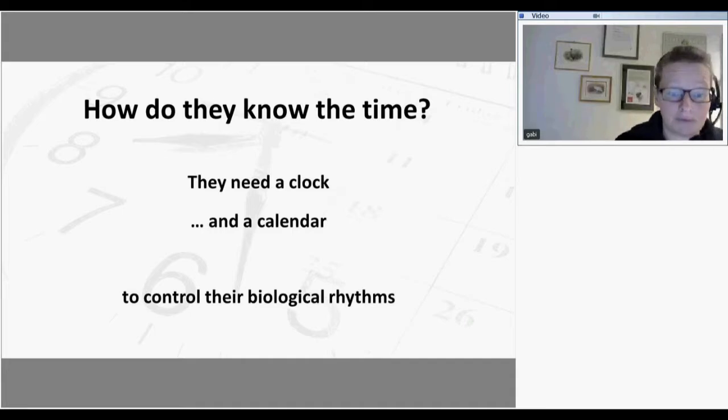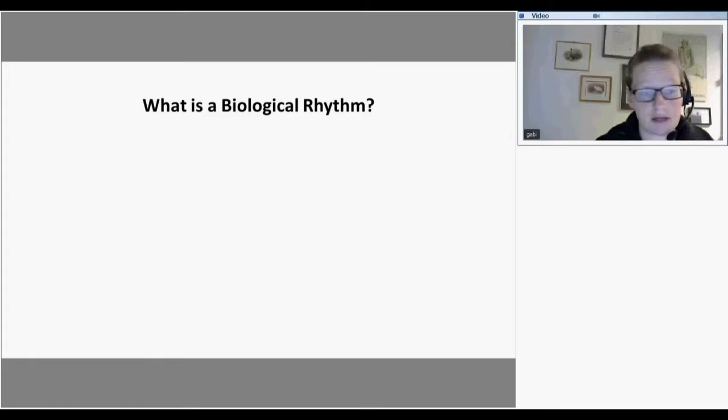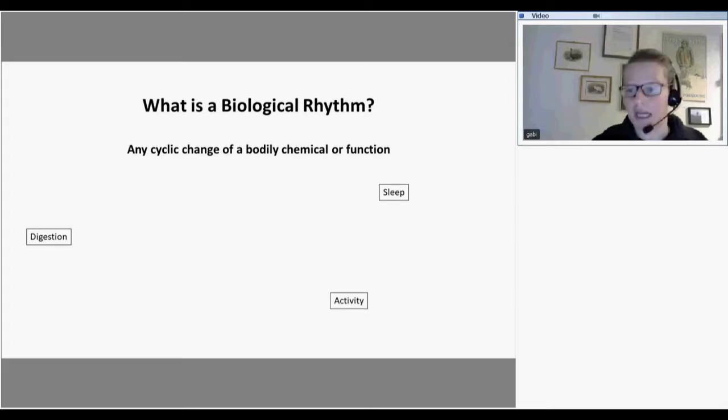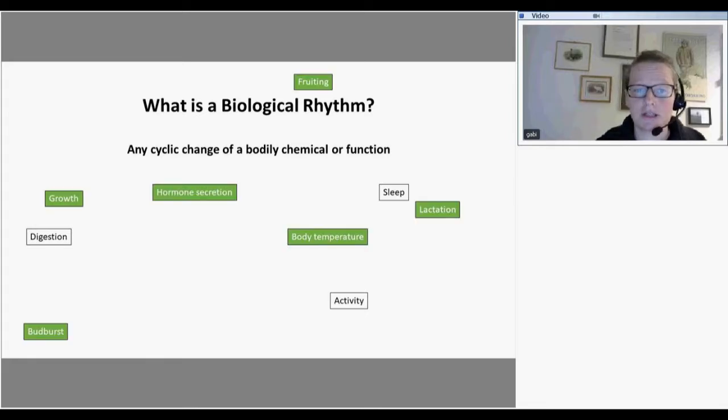There are a lot of biological rhythms. Basically a biological rhythm is any cyclic change of a bodily chemical or a function. One example is plainly a cyclic change between activity and inactivity, sleep and activity, or digestion. You can also get cyclic changes in bodily functions. For example, your body temperature goes up and down during the day. You can get growth. The cells in your body don't grow the same all the way through the day. There are cycles in that rhythm as well. You can have buds bursts in plants or fruiting or lactation.